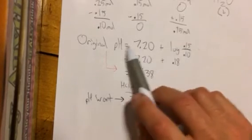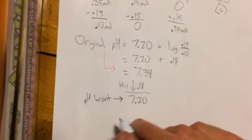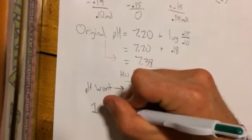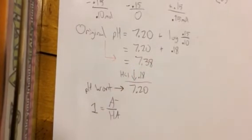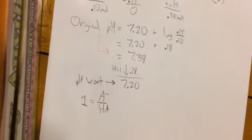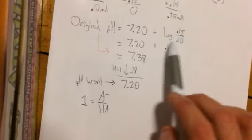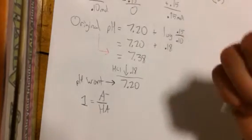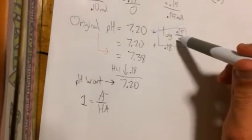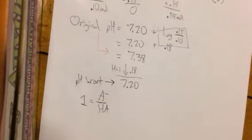So let's figure that out. So 1 equals A minus over HA. And we do this again because if we can make this section here equal to 0, then we will be left with just 7.20.